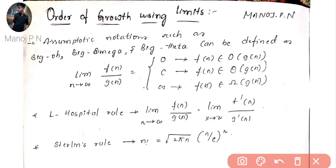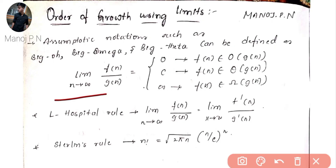The most easy topic in the first module of DAA, that is Design and Analysis of Algorithms. Let's see what order of growth is exactly. In limits, the asymptotic notation such as Big O, Big Omega, and Big Theta can be defined as: limit n tends to infinity of f(n)